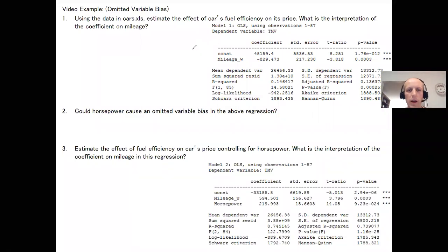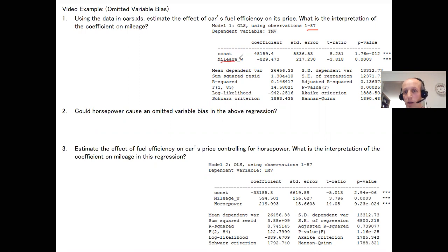In this exercise we're asked to estimate the effect of a car's fuel efficiency on its price. We have data on 87 cars and the dependent variable is the price of a car measured as true market value, and the independent variable is mileage, miles per gallon — that's the measure of fuel efficiency. So we estimate the regression where price is the dependent variable and we have just one independent variable, miles per gallon.